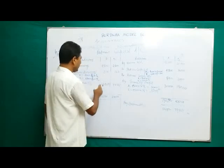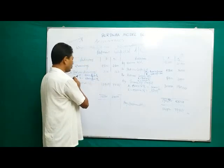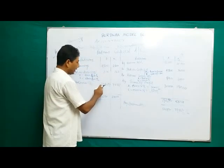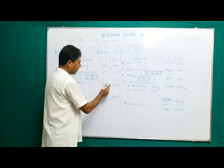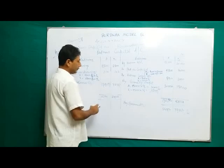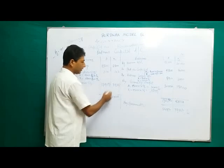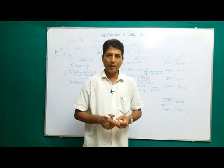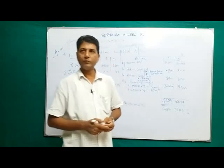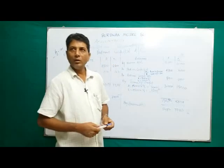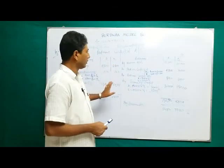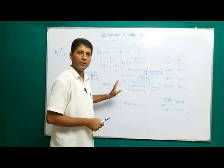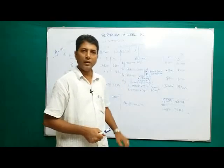Balance c/d: 1,24,187 for Onuba and 77,337 for Kajol. Interest on drawings will also be calculated here. This completes the problem. Everything is clear and complete in today's class.